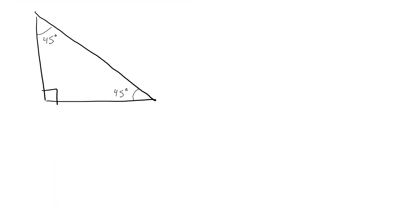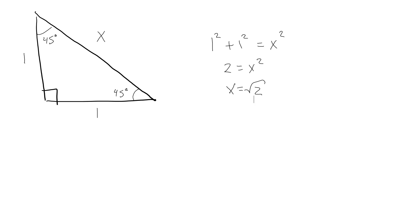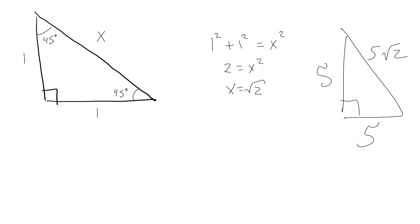Now for the 45-45-90 triangle. This is an isosceles right triangle, so both legs are equal. If each leg is 1, then by the Pythagorean theorem: 1² + 1² = x², so x² = 2, meaning x = √2. The ratio is 1:1:√2, which is a bit simpler than the 30-60-90.